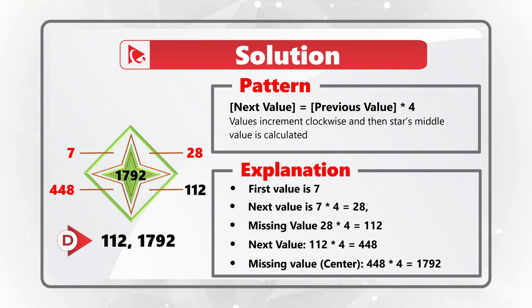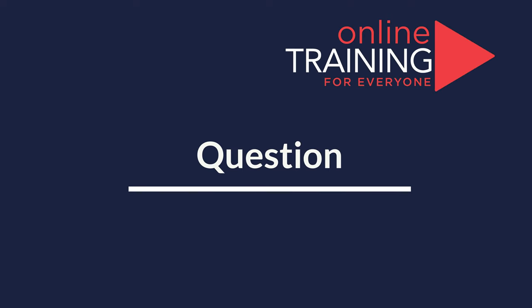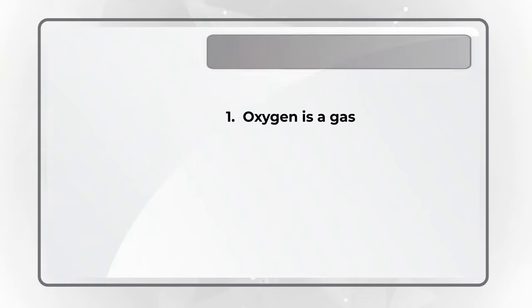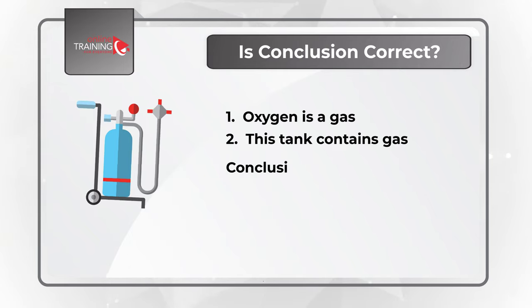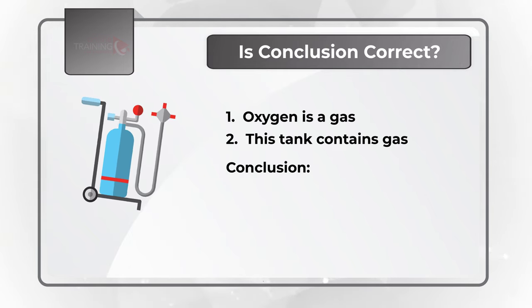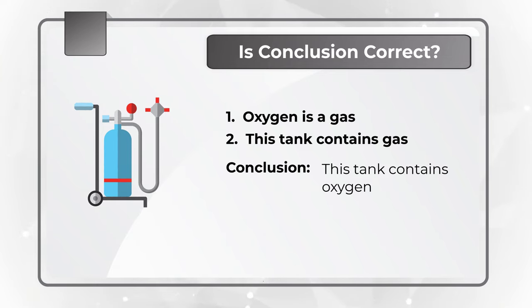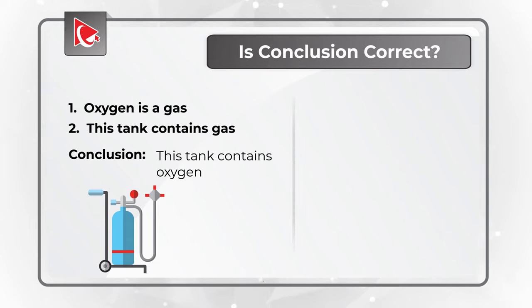Hopefully you've nailed this question and now know how to answer similar problems on the test. Let's look at the question where you need to come up with the logical conclusion. Oxygen is a gas. This tank contains gas. The conclusion drawn based on these two statements is that this tank contains oxygen. You need to determine if this conclusion is correct.